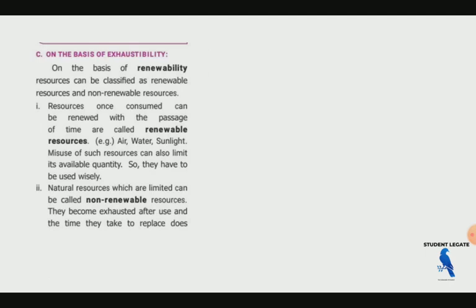On the basis of exhaustibility, resources can be classified as renewable resources and non-renewable resources. Renewable resources are those which, once consumed, can be renewed with the passage of time. Examples of renewable resources are air, water, and sunlight.